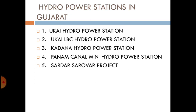Next is the Kadana Hydro Power Station. This power station is located in Panchmahal district, on the Mahi river, near the Kadana dam. It has 4 hydro turbines of 100 MW each, with a total installed capacity of 240 MW.